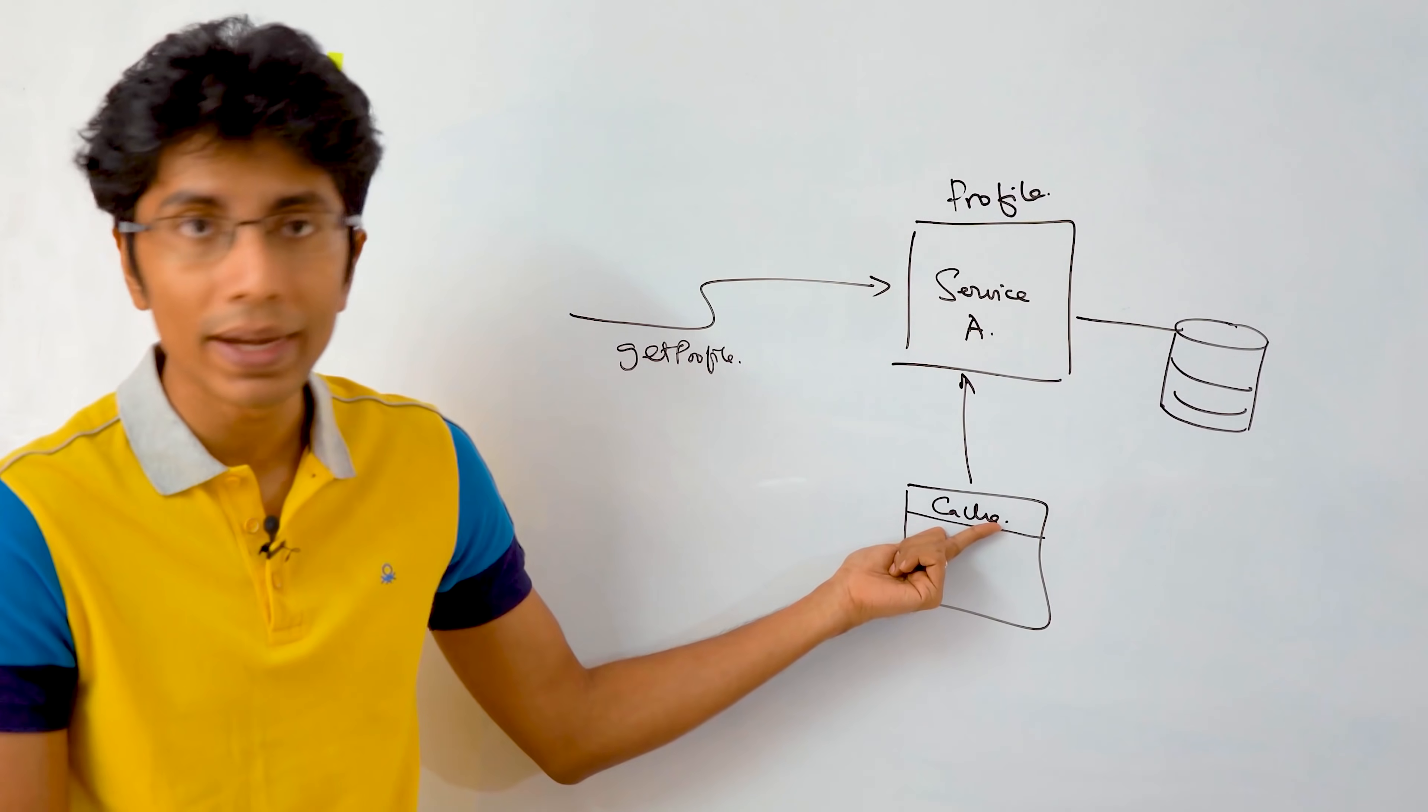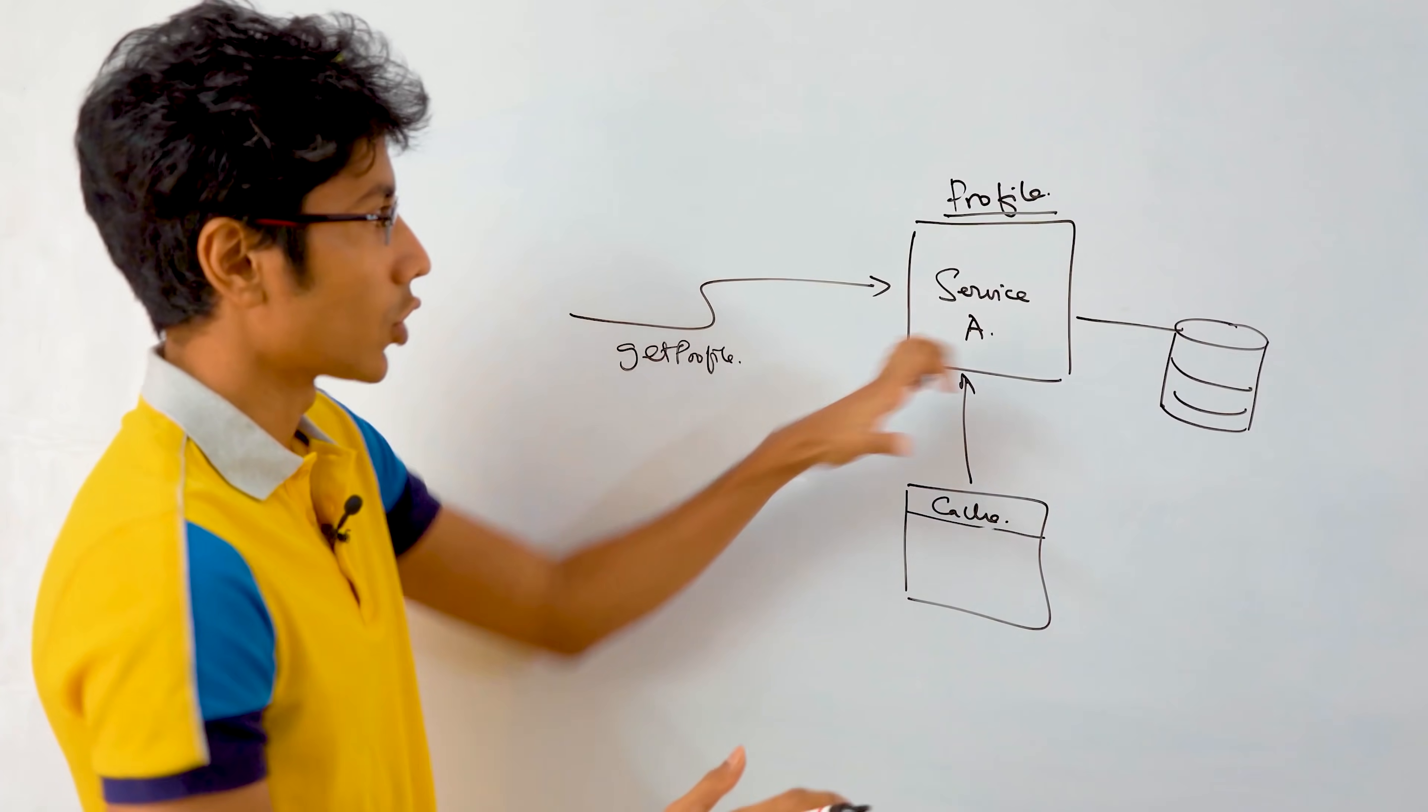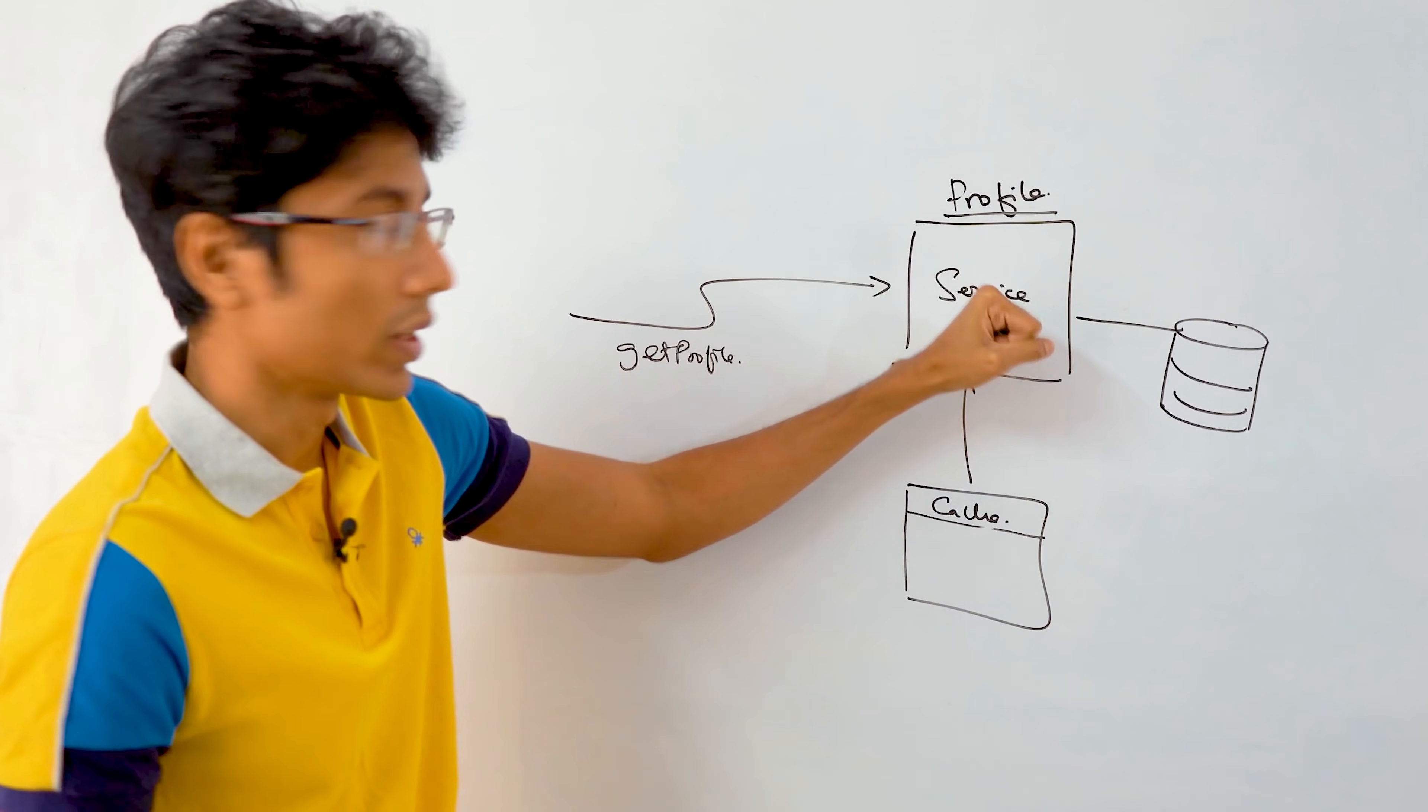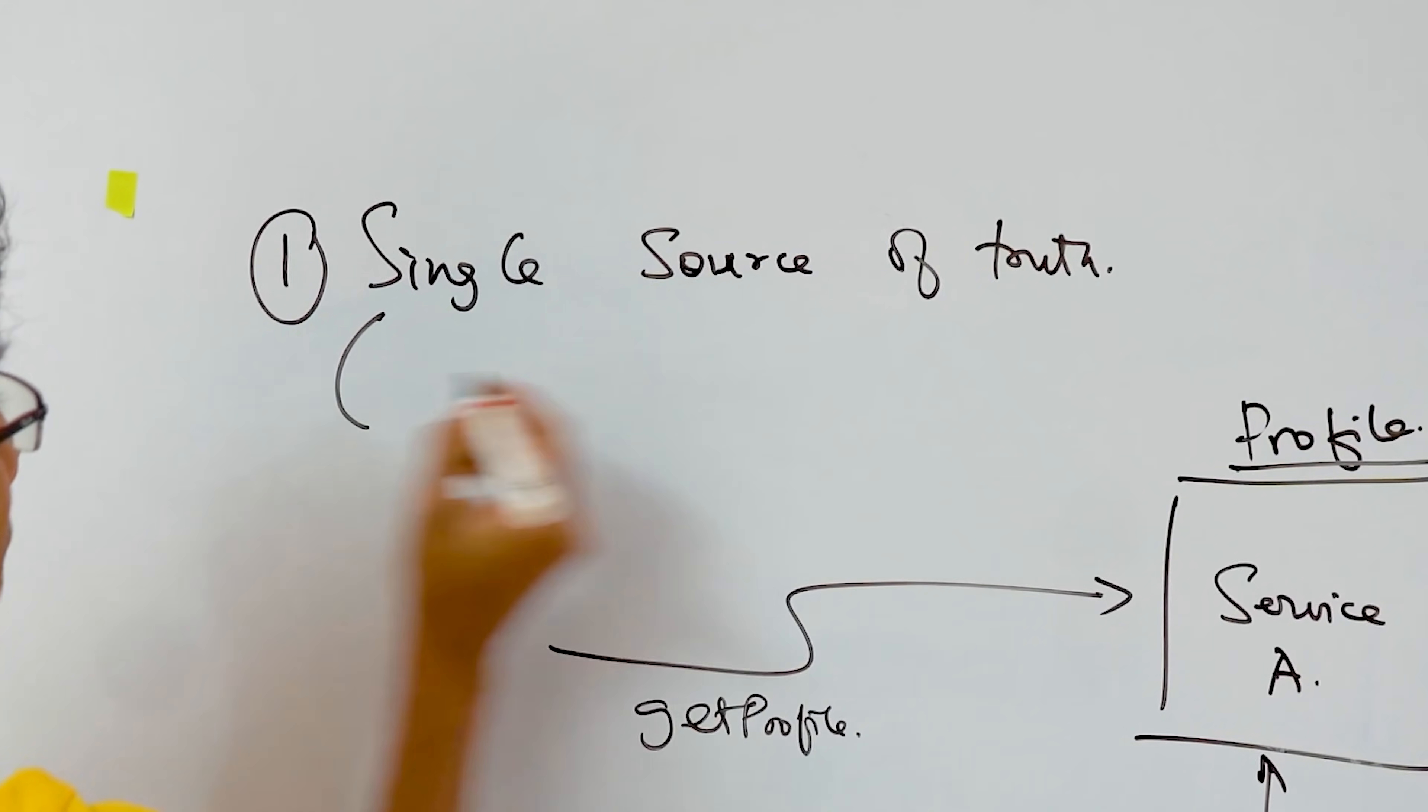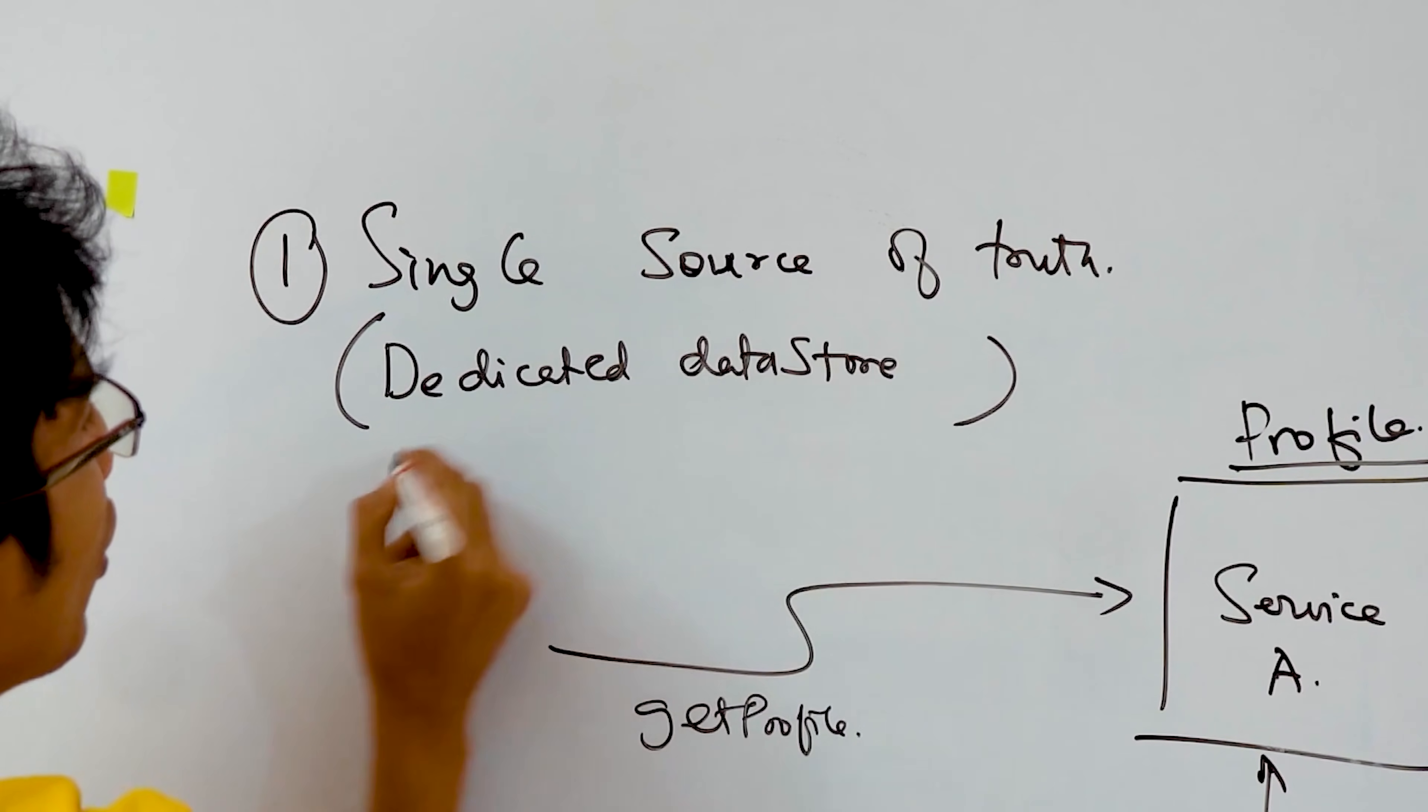Now it might store it locally in a cache. That is okay. It's not taking real responsibility for the cache. The expectation is that whenever you need to update the cache, you need to make a network call to the profile service. So you are the source of truth. You are a single source of truth. Every component in your architecture has to have a single source of truth when it comes to microservices, which only happens if you have a dedicated data store for each service.